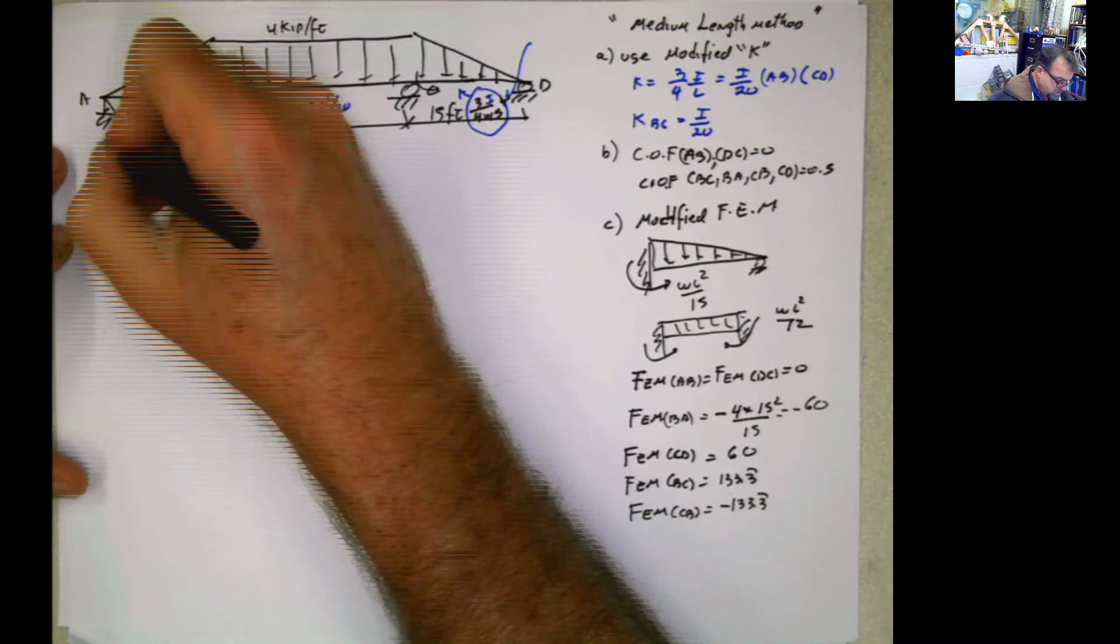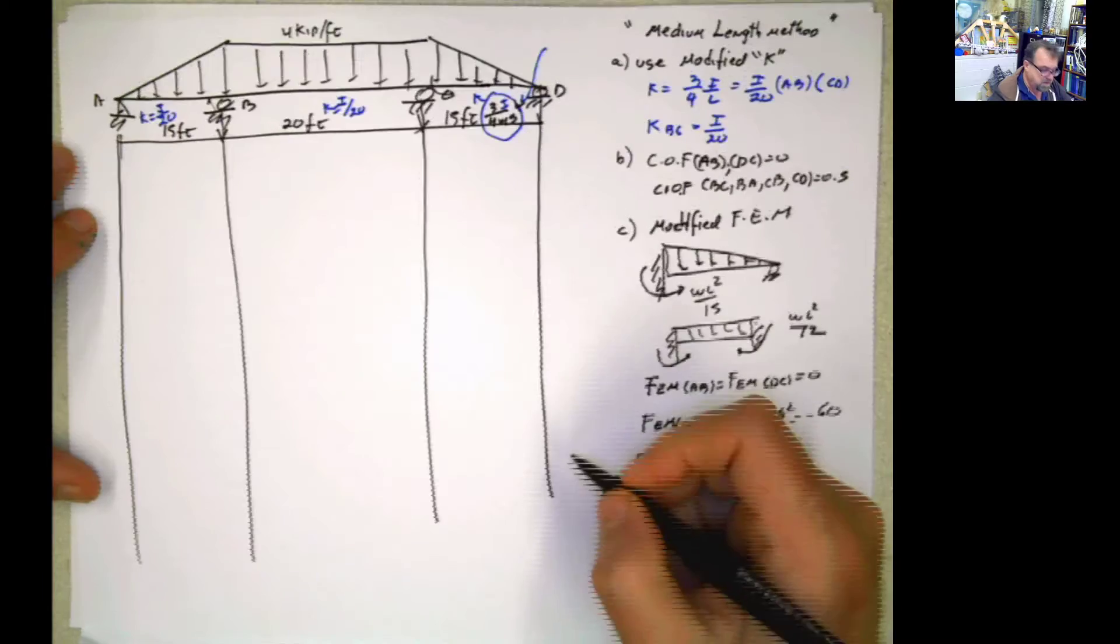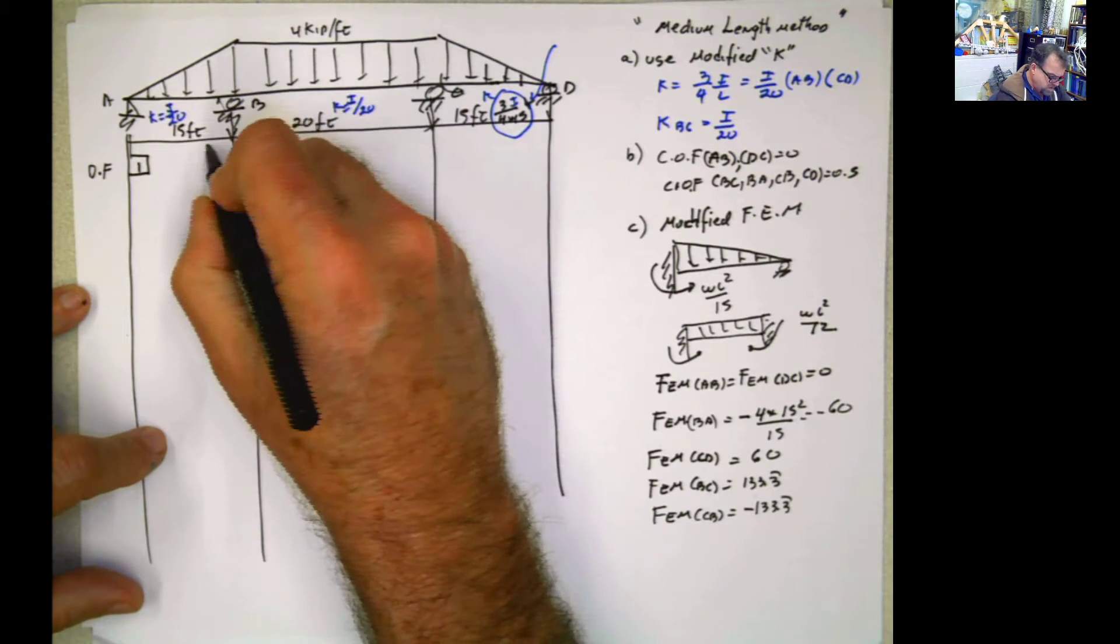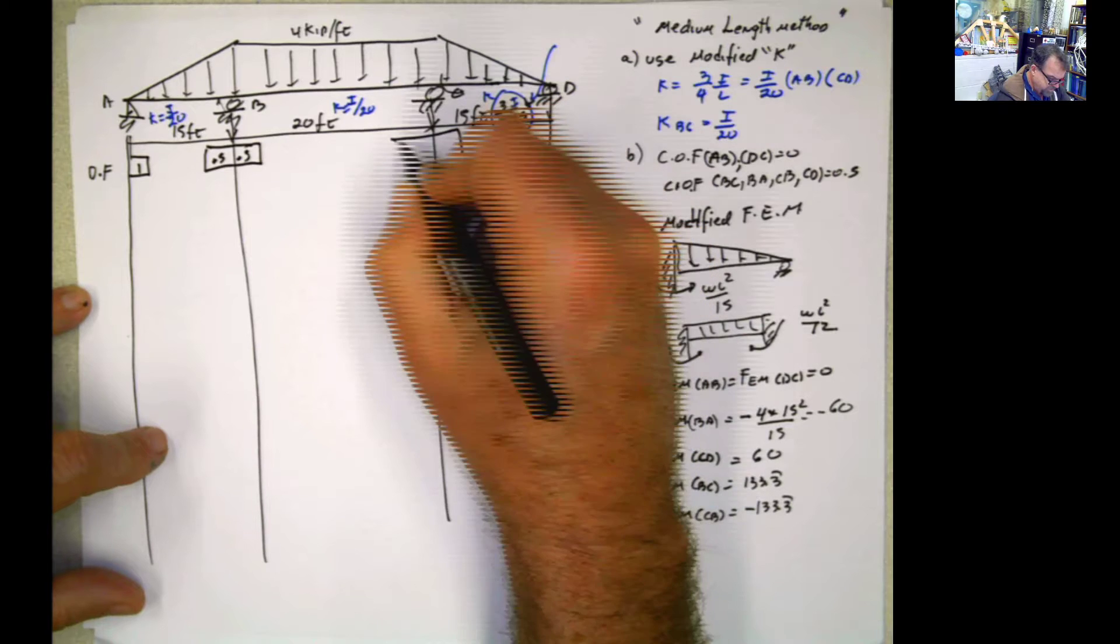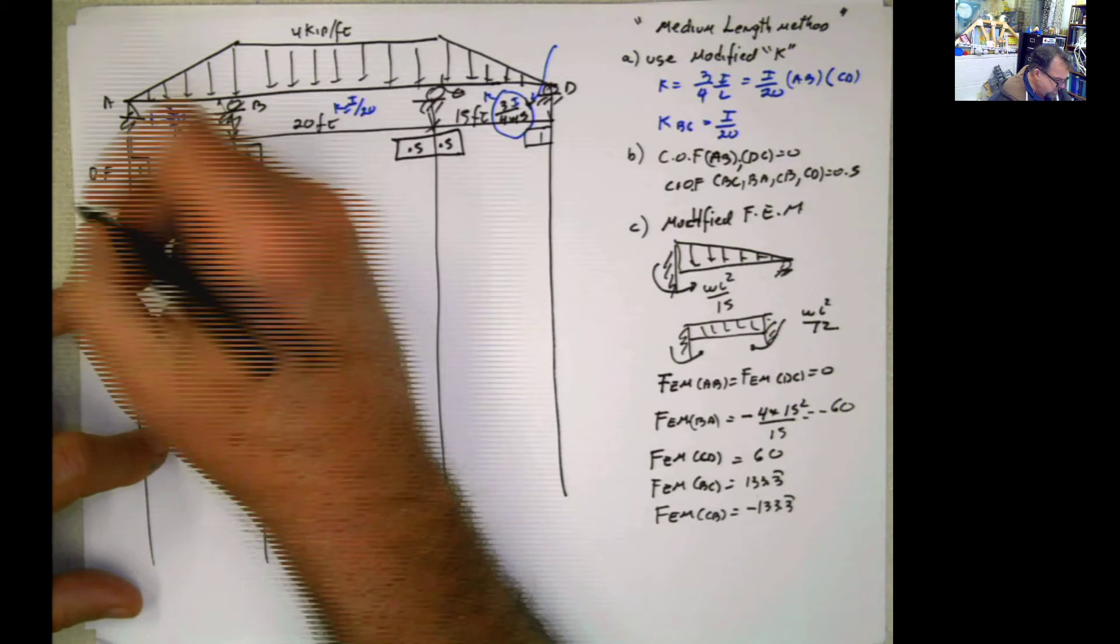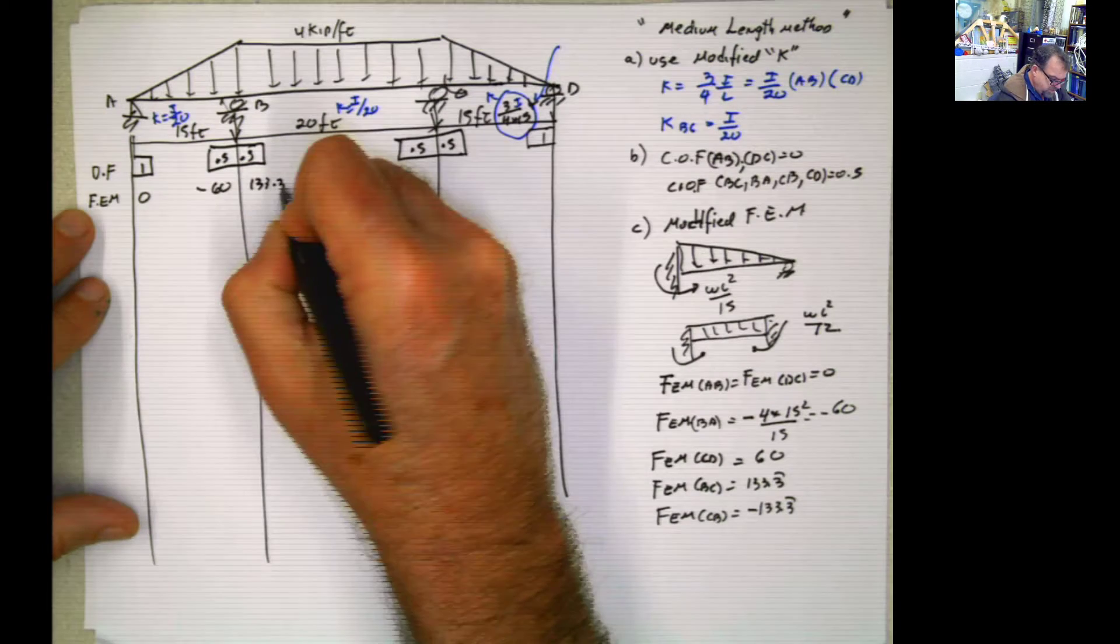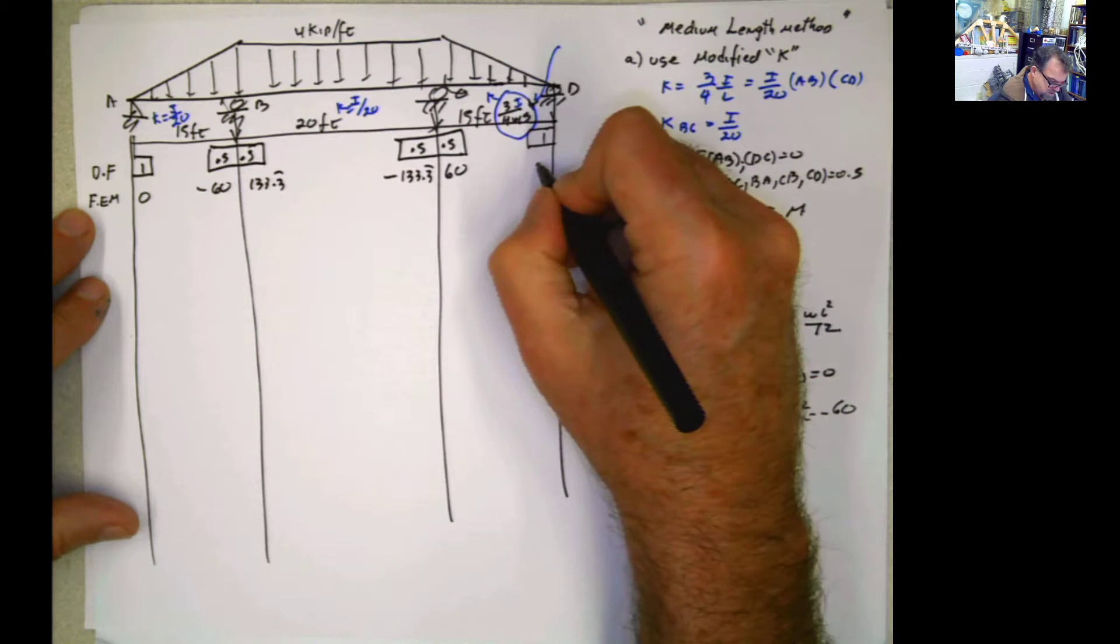Now, once we have all of these, easy peasy, lemon squeezy. We come here, distribution factors. Distribution factor 1, 0.5, 0.5, 0.5, 0.5, 0.5, 0.5, 0.5, 0.5. And this is 1. I don't need it, but it's 1. The fixed end moment for this one is 0, negative 60, 133.3. Negative 133.3, 60, and 0.